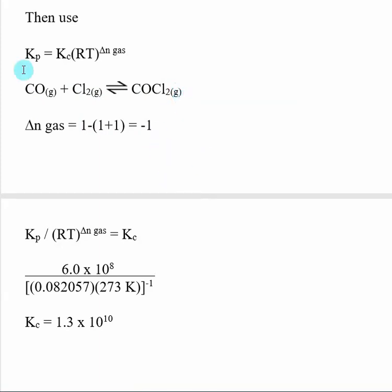So now that I know what delta n gas is, I take this equation, I solve for Kc. We calculated Kp already. R is our gas law constant. T was told to be zero degrees C or 273 Kelvin. And then we raise that to delta n gas, which is minus one. And from there we get Kc for this reaction is 1.3 times 10 to the 10th.